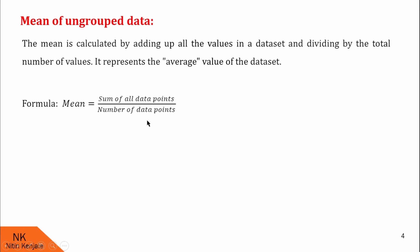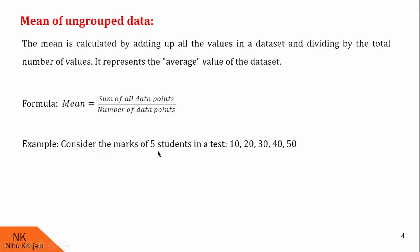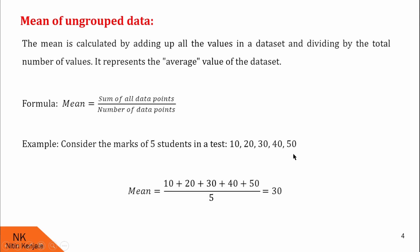Let us understand this with the help of an example. Consider the marks of 5 students in a test. The marks are 10, 20, 30, 40, and 50. Therefore, there are 5 data points in the set, so the denominator becomes 5. In the numerator, we calculate the sum of these marks. So mean becomes (10 + 20 + 30 + 40 + 50) divided by 5. After calculating this, mean is equal to 30 for this data.